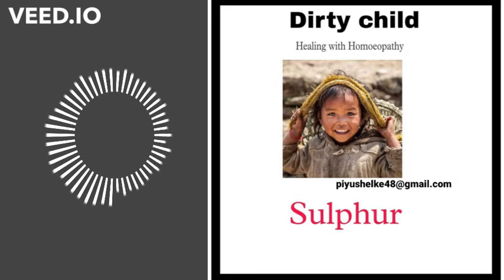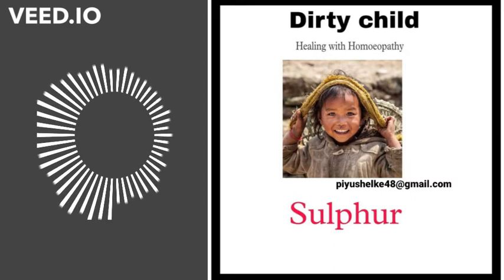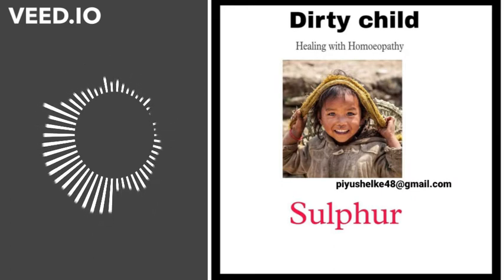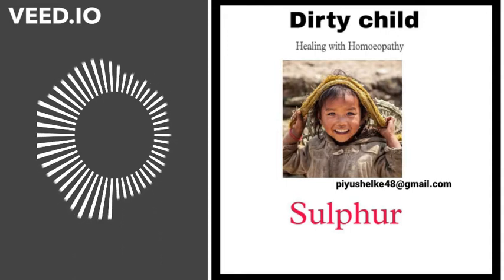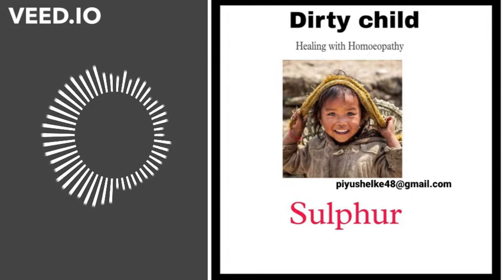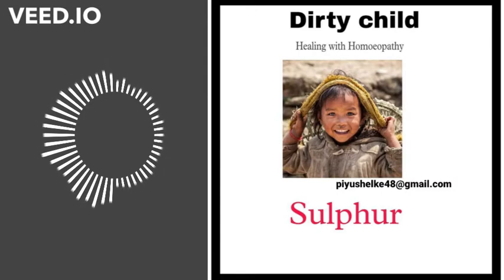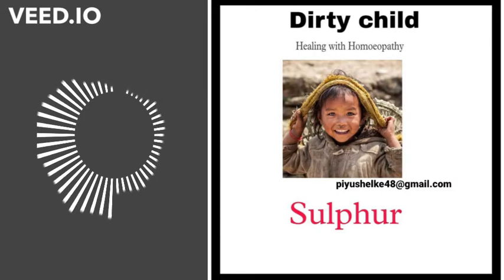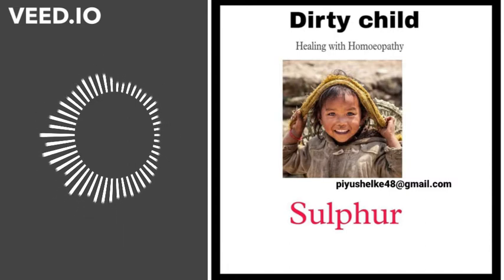Sulfur is like a 'dirty' theme — there is the ability to keep himself clean, but still he is prone to be dirty. That should be something characteristic to remember about sulfur. In spite of washing his face many times, it looks dirty. He does not keep his things in order — his clothes, books, and toys may be spread everywhere. There is a state of disorder, untidiness, and uncleanliness.